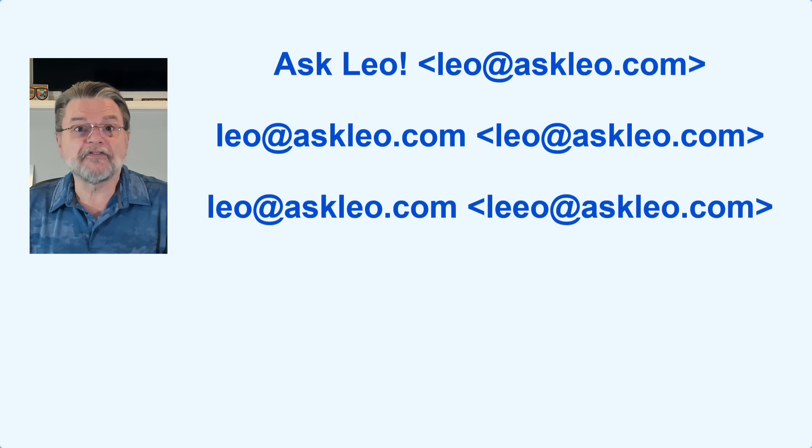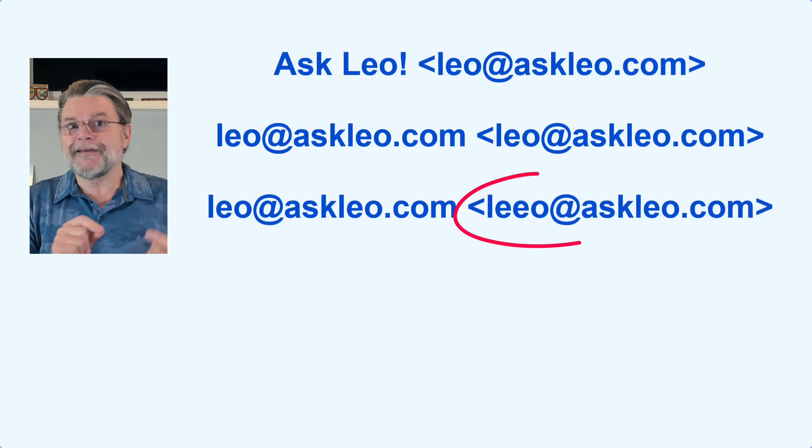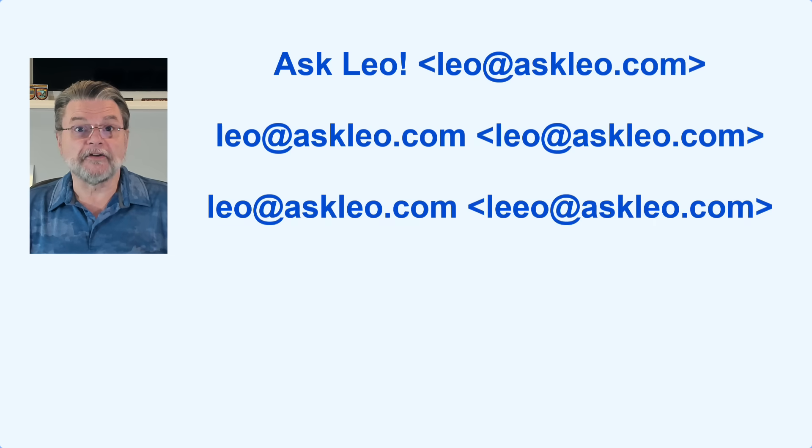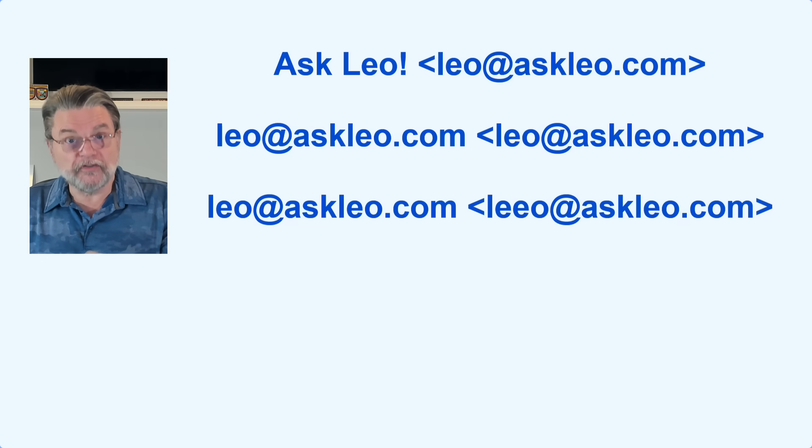Consider this: 'leo@askleo.com' as the display name, but 'leeo@askleo.com' — with an extra E — as the email address. The typo is in the first name. The display name looks correct, and it's possible that might be the only thing you see. But the email address, the address used to actually send your message, is wrong. Many email programs will only display the display name and hide the email address. You may be able to hover over a link or look for more information to see the actual email address. Even worse is when the display name looks like an email address, but the actual email address is both different and incorrect — it looks right, but if you hover over it, you'll see the actual email address has that pesky typo and it just won't work.